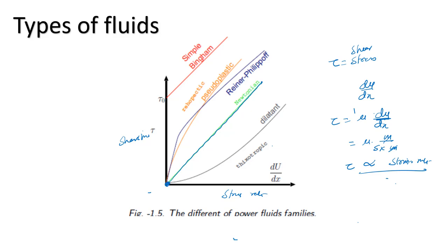A question was also asked in GATE regarding which is a Newtonian fluid. For a Newtonian fluid, shear stress is directly proportional to strain rate — shown as a straight green line on the diagram. At zero strain rate, there is also zero shear stress. Other fluid types include Bingham fluid, Pseudoplastic fluid, Dilatant, and Thixotropic fluids, but the most important one is the Newtonian fluid.